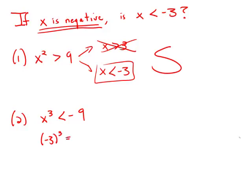First of all, remember that the cube of a negative number would be negative. Negative 3 cubed equals negative 27, and negative 2 cubed equals negative 8.